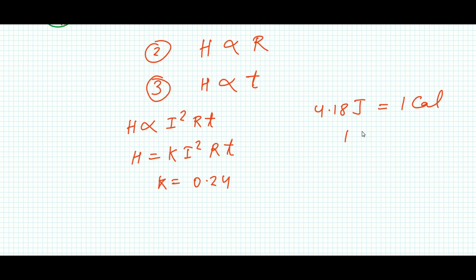Here K equals the Joule constant and it is 0.24. It came from here: 4.18 Joule equals 1 calorie.